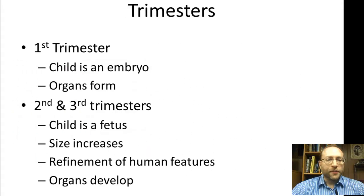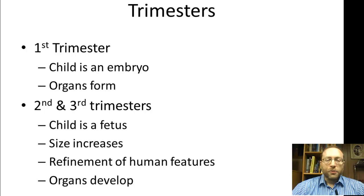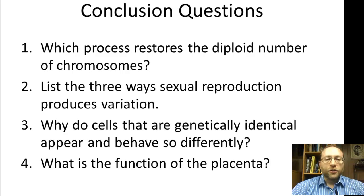Here's a brief summary of the trimesters. In the first trimester, the child is called an embryo — this is where the organs form and where you see the most rapid change. In the second and third trimesters, the child is called a fetus; all the organs have formed but are developing further, the fetus's size increases, and human features become more refined. Conclusion questions: Which process restores the diploid number of chromosomes? List the three ways that sexual reproduction produces variation. Why do genetically identical cells appear and behave so differently? And what is the function of the placenta? That concludes this vodcast and I will see you in class tomorrow.